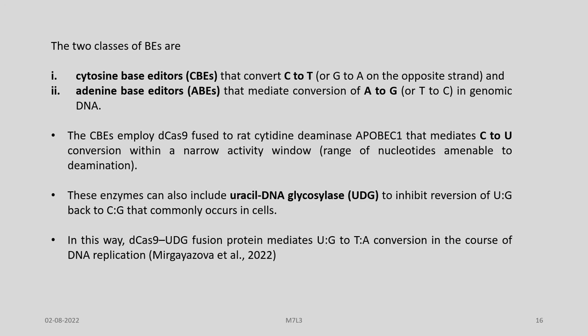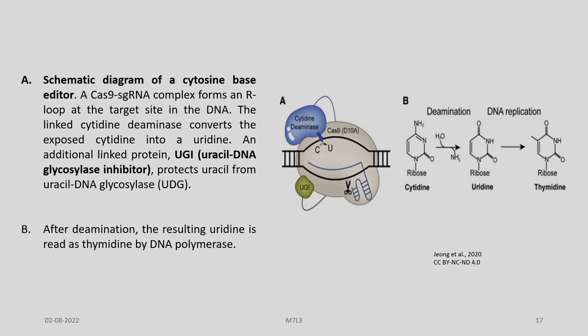We have two classes of base editors: the cytosine base editor (CBE) that converts C to T, and adenosine base editors (ABEs) which mediate the conversion of A to G in genomic DNA. The CBEs employ dCas9 fused to rat cytidine deaminase APOBEC1 that mediates C-to-U conversion within a narrow activity window. These enzymes can also include uracil DNA glycosylase (UDG) inhibitor to prevent reversion of U back to C, which commonly occurs in cells. The dCas9-UGI fusion protein mediates U-to-T conversion in the course of DNA replication.